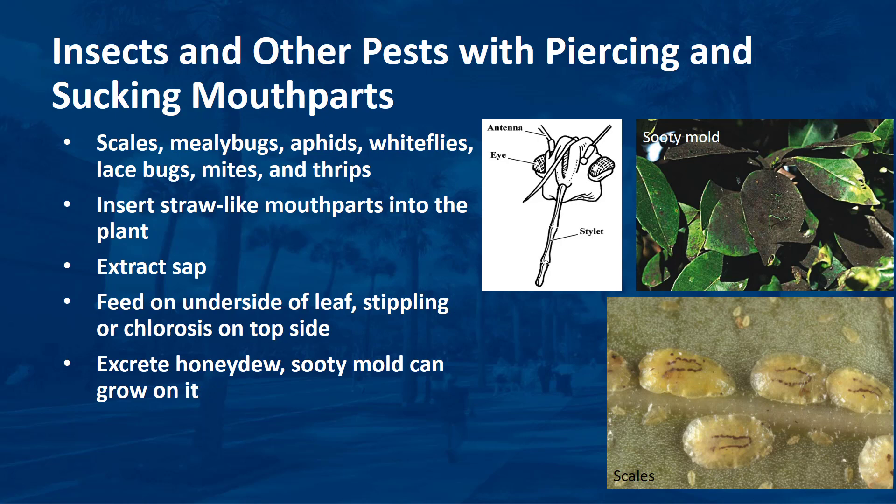These pests insert their straw-like mouthparts into the plant, then they extract sap from the plant. Many of these insects feed on the underside of leaves, but you can see the damage on the surfaces of leaves. The leaves appear stippled or chlorotic. Soft scales, mealybugs, whiteflies, and aphids are insects that excrete large amounts of honeydew, a sugary waste product. A black fungus known as sooty mold grows on the honeydew, imparting a black appearance on the plant and slowing plant growth. Once you control the insects, honeydew and sooty mold usually diminish. Mites, although not true insects, also possess piercing and sucking mouthparts.